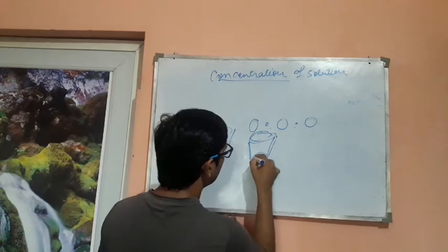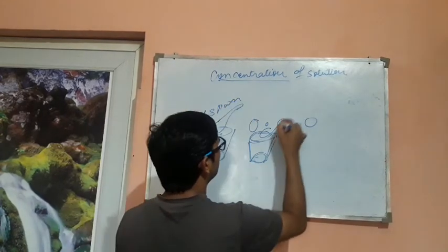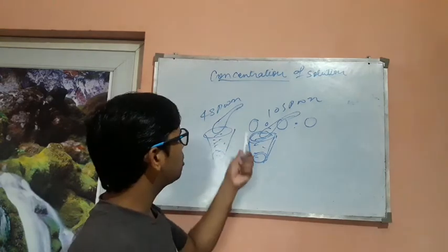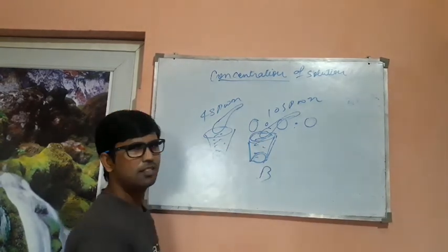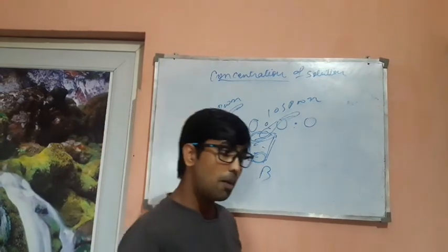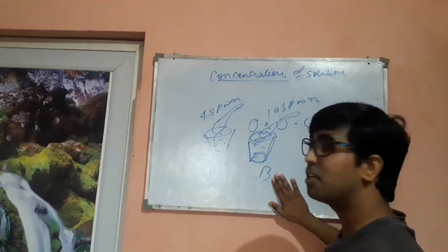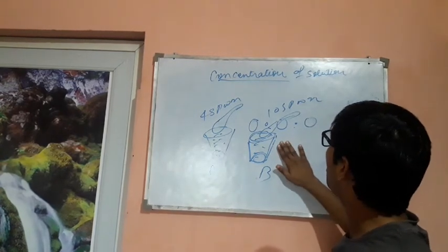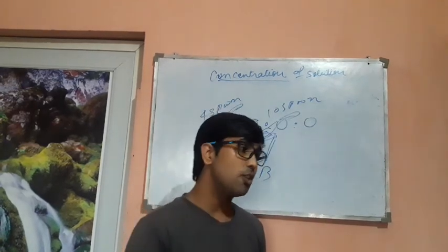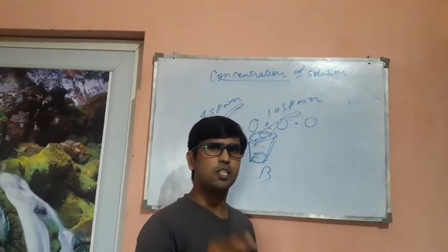Take another example: mix four spoons of sugar in container A and ten spoons in container B, with a similar amount of water. Which concentration is higher? Container B, because there are ten spoons of sugar versus only four. The amount of solute is greater in tumbler B, so the concentration of the solution is higher in B. Concentration of any solution is actually determined by the amount of solute present in a particular solvent at a particular temperature.